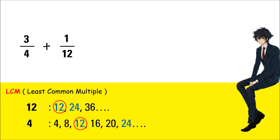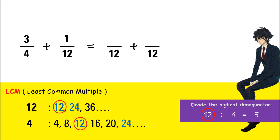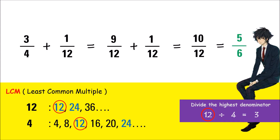We can also easily spot the LCM of the given denominators by dividing the biggest number with the smaller numbers. For example, 12 divided by 4 is 3. If the remainder of your answer is 0, or no remainder at all, therefore the LCM of the given denominators is the biggest denominator, which is 12. Now let's use this LCM to make like fractions. 12 divided by 4 is 3; 3 times 3 is 9. 12 divided by 12 is 1; 1 times 1 is 1. The LCM is now our LCD. Then add: 9 plus 1 is 10. Always reduce the answer to its lowest terms. Thus, the final answer is 5 sixths.